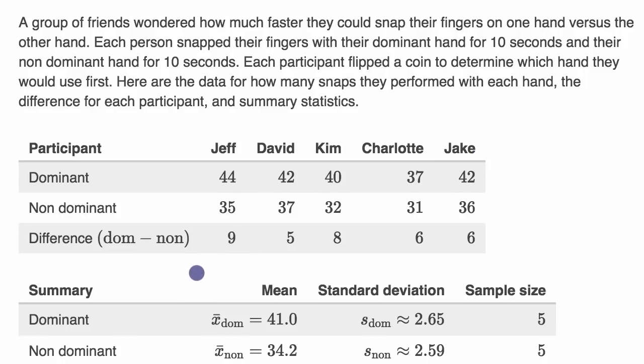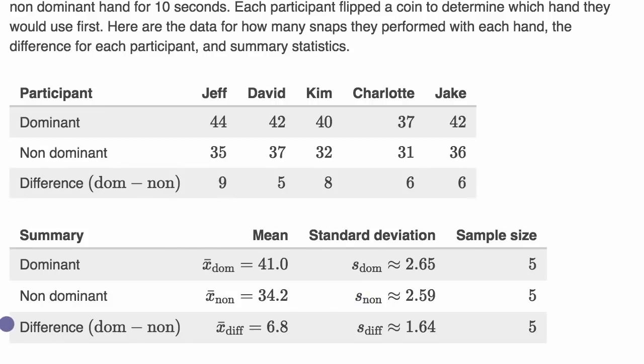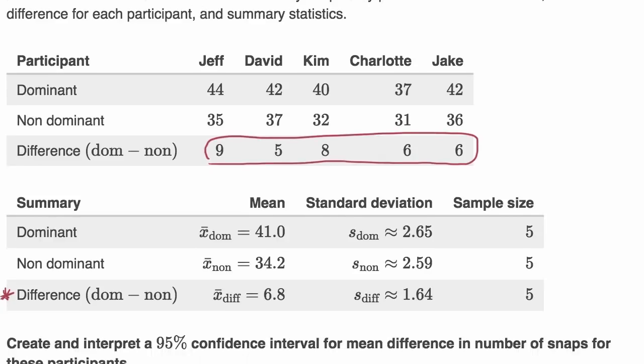And then they tabulated this data for all five members. Now they also calculated summary statistics for them. But this is the really interesting thing right over here. This is the difference between the dominant and the non-dominant hand. And so what they did here, the mean difference, what they did is they took this row right over here, and they calculated the mean, which they got to be 6.8. And then they calculated the standard deviation of these differences right over here, which they got to be approximately 1.64.